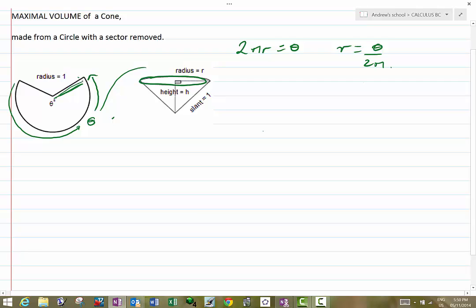Now the original radius of the circle is going to become the slant height of the cone, so we can use Pythagoras to establish that the height is going to be the square root of 1 minus r squared, which is going to be the square root of 1 minus theta over 2 pi squared.